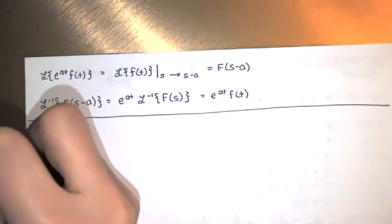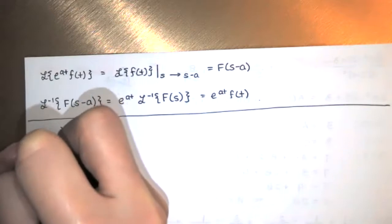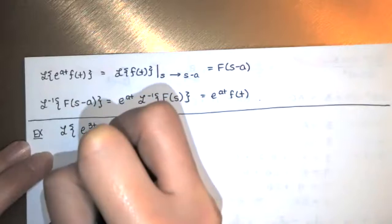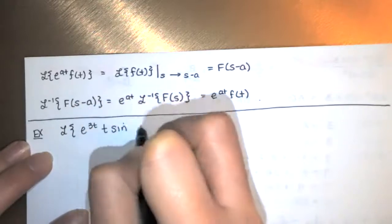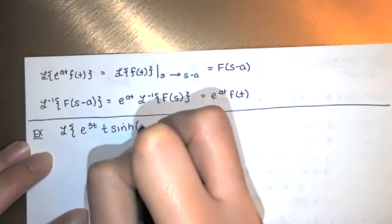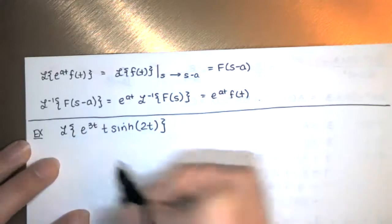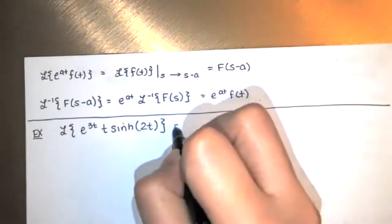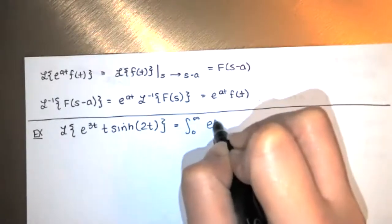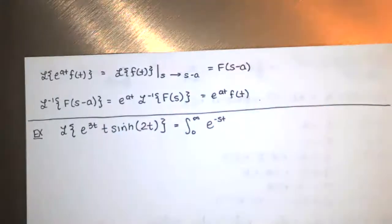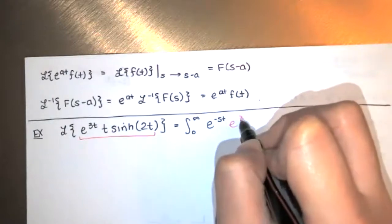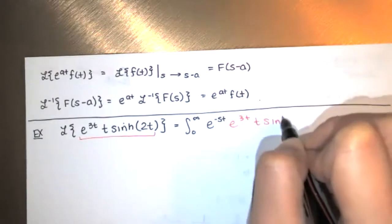Let's apply this in an example. Let's say somebody asks you to compute the Laplace transform of e to the 3t times t times hyperbolic sine of 2t. I definitely do not want to use the definition for this — I'd have to evaluate the integral from zero to infinity of e to the negative st times e to the 3t times t times hyperbolic sine of 2t.